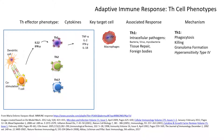This TH1 mechanism also plays an important role in hypersensitivity type 4, against different kinds of foreign antigens, including drugs. Cellular immunogenicity can result from macrophage activation against a drug when the dendritic cell presents the drug as a dangerous signal.